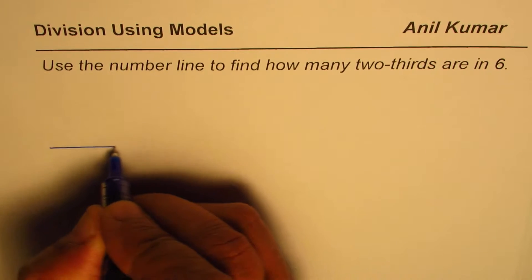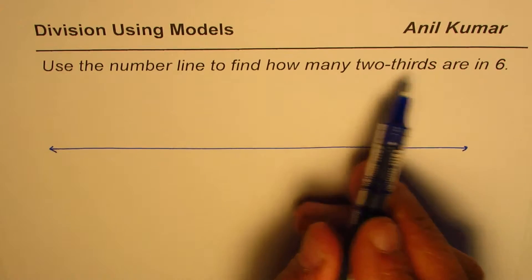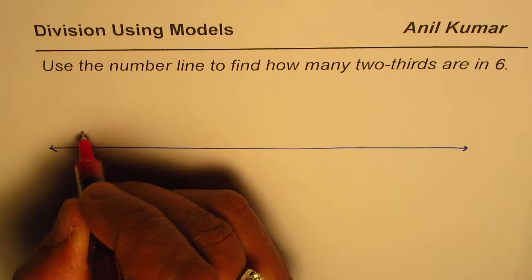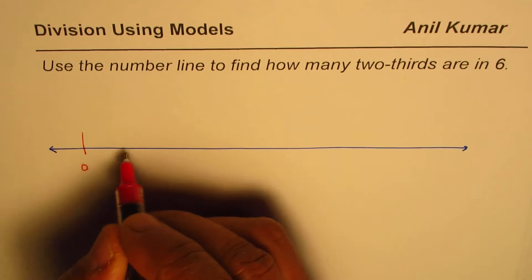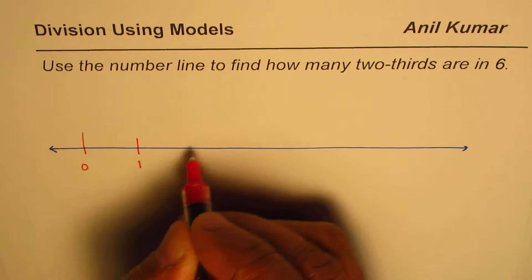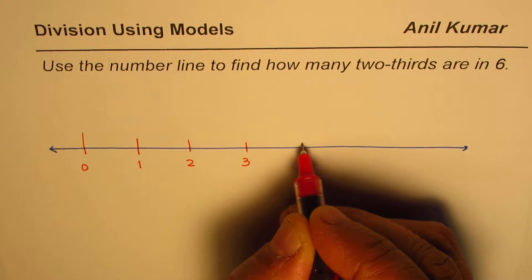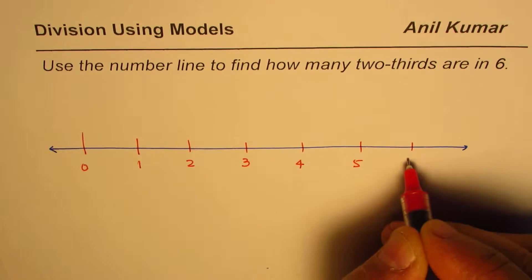So we'll use a number line. Let's say this is our number line. And we want to know how many two-thirds are in six. So that is to say if I start from zero, move positive numbers towards the right. Let's say this is one and then this is two, three, four, five and let's say six.